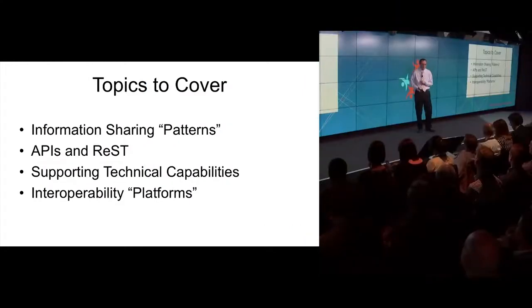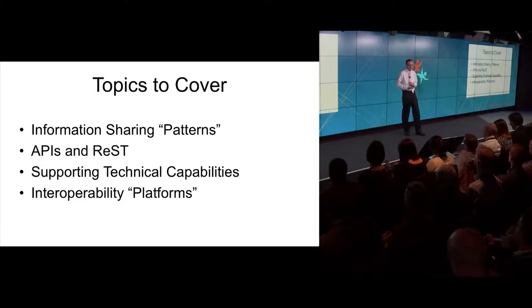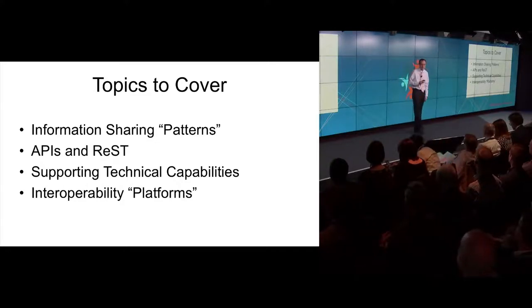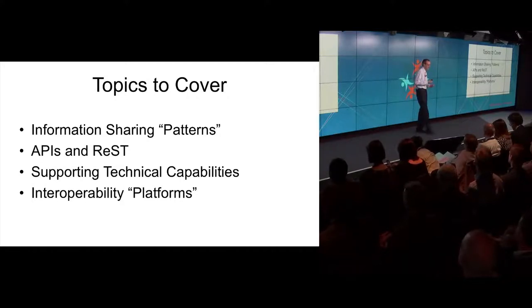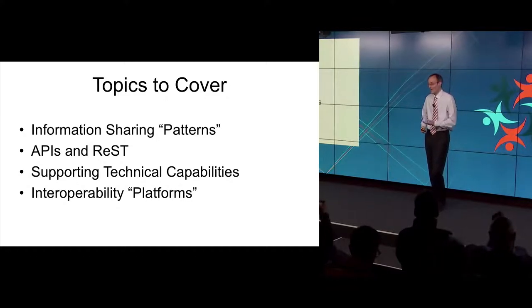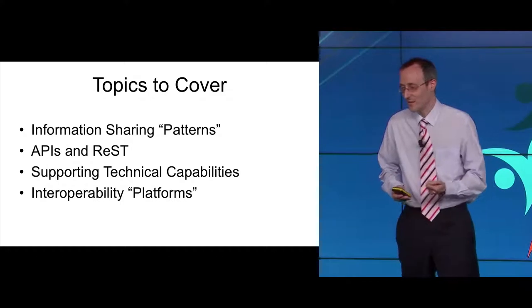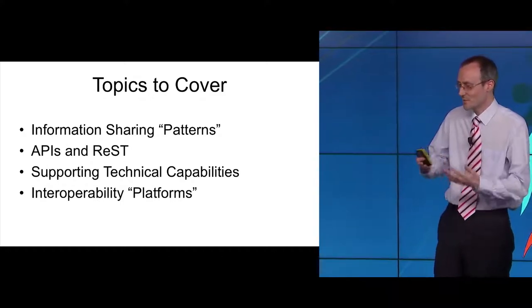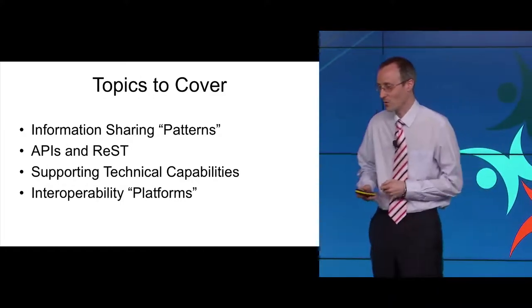I want to start by talking about some of the different approaches and patterns. We've heard a bit about messaging, which is one way of sending information from one place to another, but there are other approaches. I'll build on what Matt was saying around APIs and some of the different types of APIs. And importantly, APIs and information models and even patterns aren't enough — you do still need some other underpinning technical capabilities within either platforms or systems to make that stuff work.